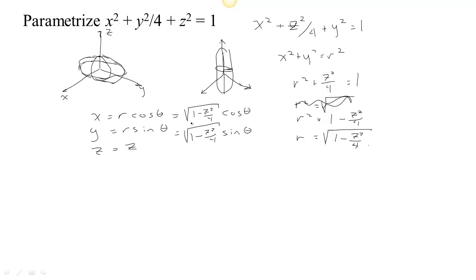So we get our parametrization — these are our three equations. Now we just need bounds on z. The lowest z can get is when x and y are both 0, right on the z-axis. When they're both 0 we have z squared over 4 equals 1, so the lowest z can get is −2 and the highest is 2. And in order to go all the way around once, θ goes from 0 to 2π.